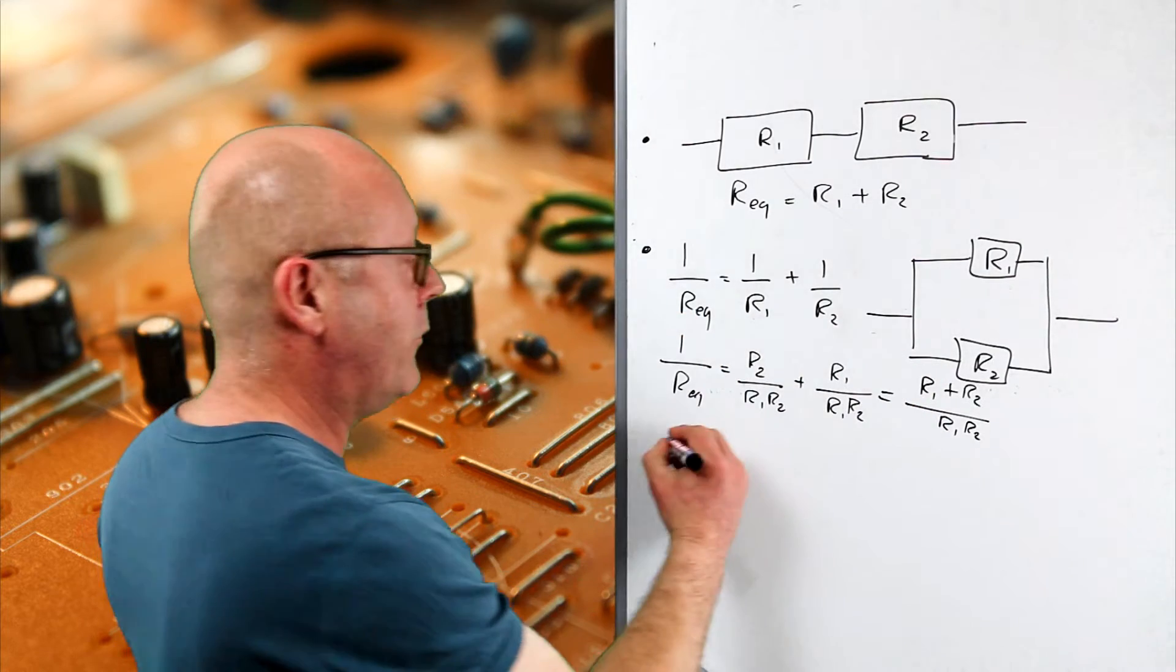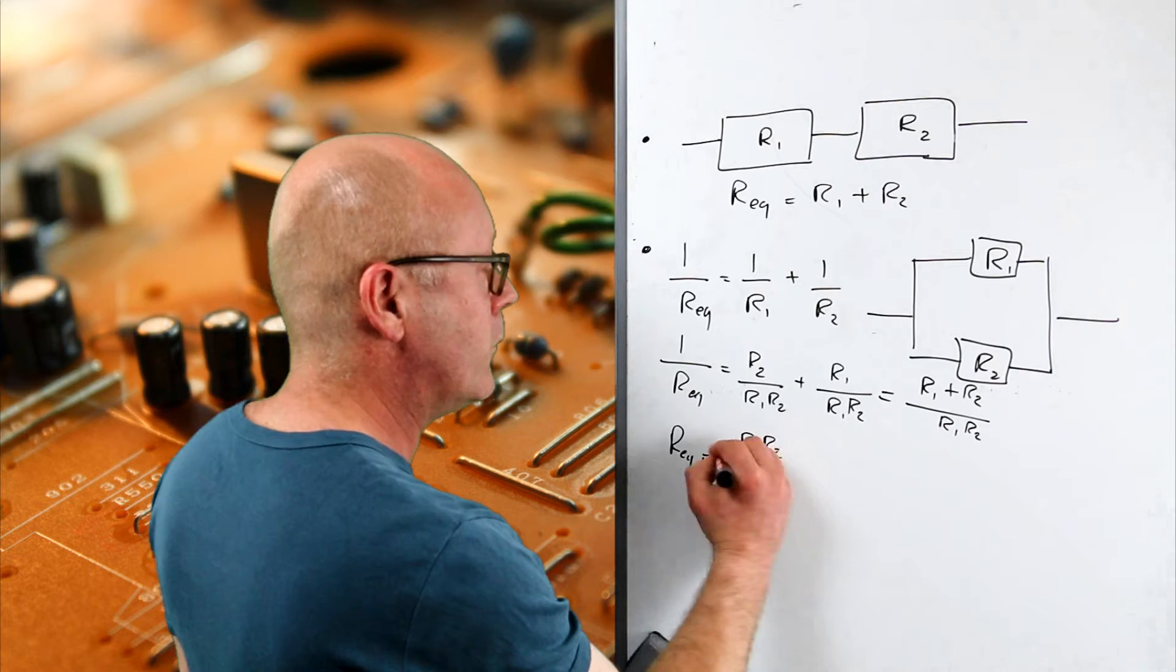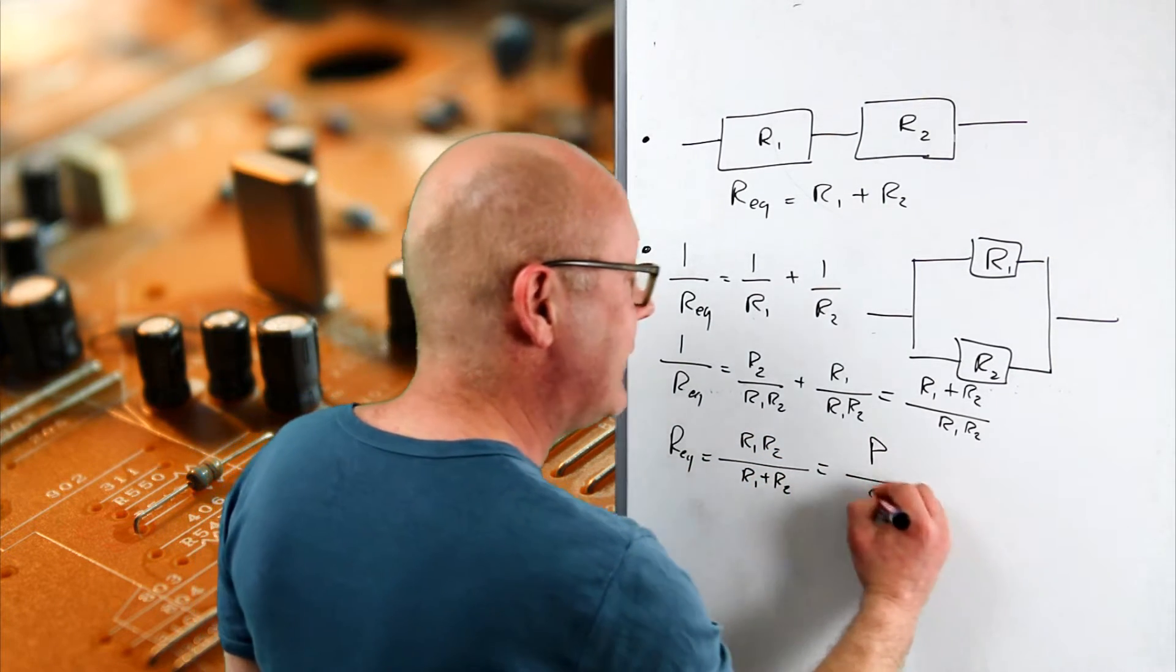So now I'll flip to find our equivalent. And I get R1, R2 on R1 plus R2. Well, that gives me product divided by sum.